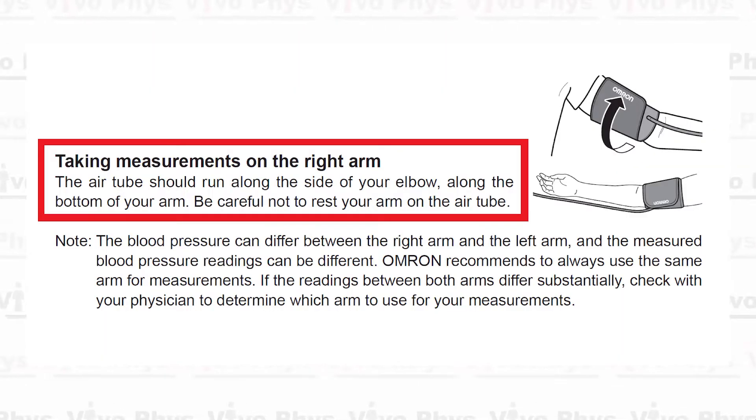If you're going to use your right arm you need to make sure that you align the cuff in a different way so that it's properly covering the brachial artery with the air bladder in the cuff. To quote the Omron manual, the air tube should run along the side of your elbow along the bottom of your arm and be careful not to rest your arm on the air tube. The reason for that is because you don't want to pinch the air tube by accident.